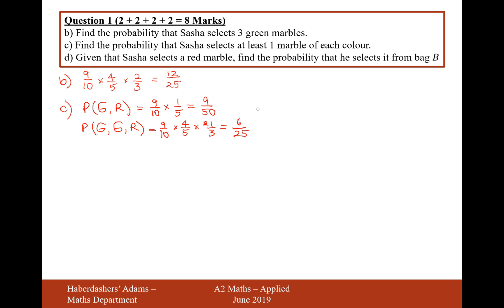Adding the results together: nine out of 50 plus six out of 25 gives 21 out of 50. So 21 out of 50 is our answer to part C.